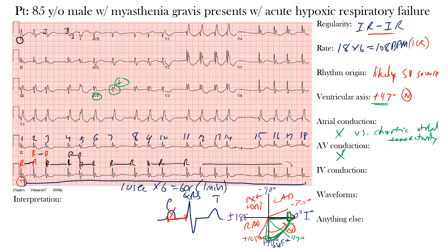Next, intraventricular conduction. We look at the duration of the QRS complexes — normal QRS duration is between 70 and 110 milliseconds, or about two to three small boxes. The QRS complexes do appear wide here. In fact, the QRS duration was 132 milliseconds, confirming prolonged intraventricular conduction.